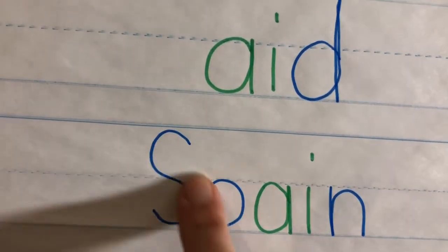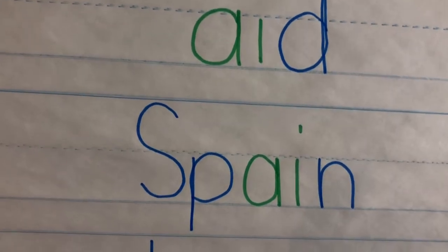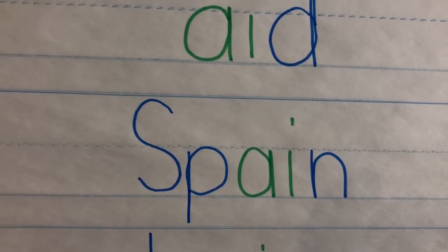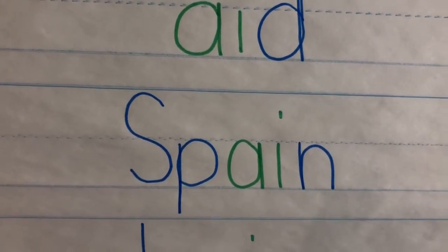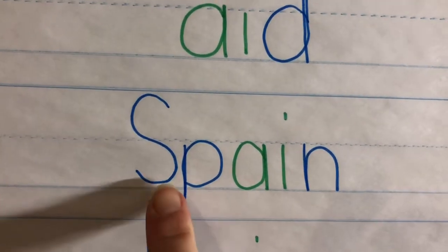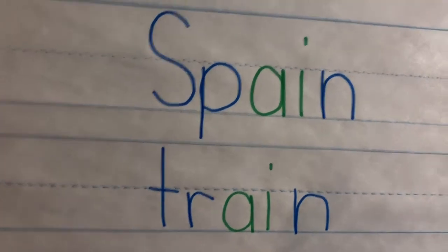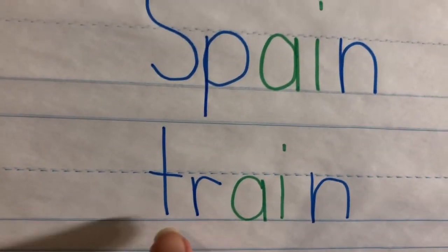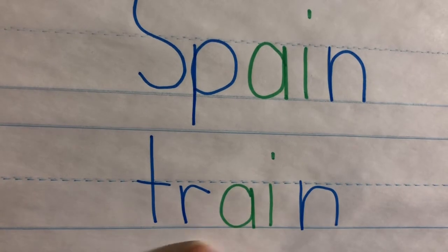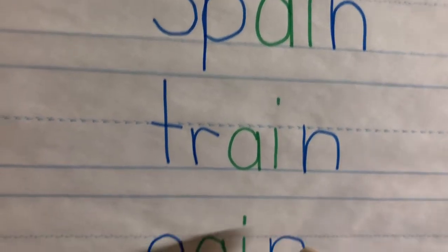SPAIN. Why did I put an uppercase S? Because it's the name of a country. Names of countries get capital letters. S-P-A-I-N. SPAIN. That's a country in Europe. T-R-A-I-N. TRAIN. That will be our theme tomorrow.